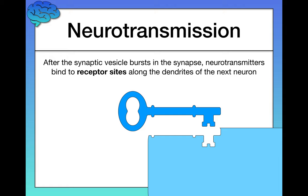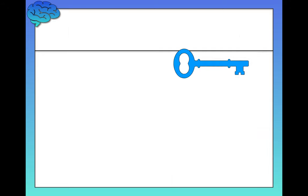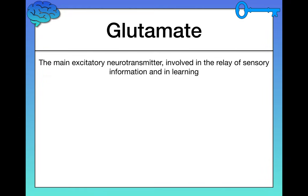There's one neurotransmitter that works with one particular type of receptor site. This is going to be important when we talk about psychoactive drugs, which operate in a way that affects those receptor sites to either enhance or block neurotransmitter activity. But before we get ahead of ourselves, let's talk about the different types of neurotransmitters. This is not an all-inclusive list, but I want to give you a flavor of the very different sorts of functions that neurotransmitters have.